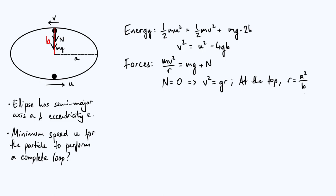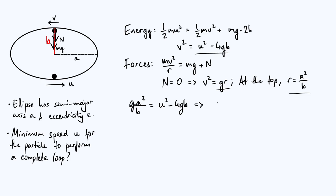Let's put all these equations together. We have two expressions for v²: from energy conservation v² = u² − 4gB, and from the critical condition v² = gr = g·a²/b. Equating these: g·a²/b = u² − 4gB. Solving for u² gives u² = g·a²/b + 4gB.